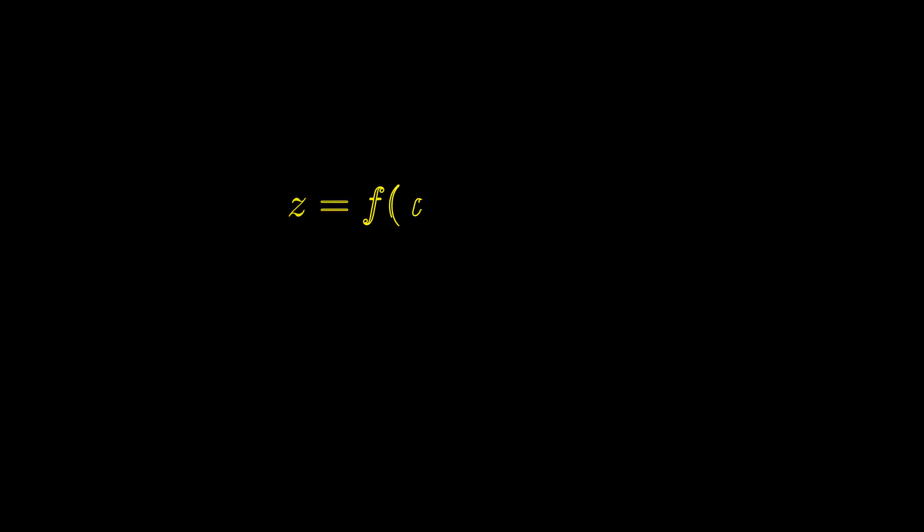Now, given a function, how do we find the direction of the steepest descent? If you have taken calculus, you might remember that it coincides with the negative of the function gradient, where each element is given by a partial derivative.